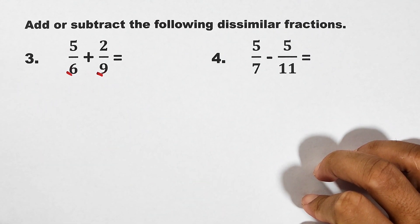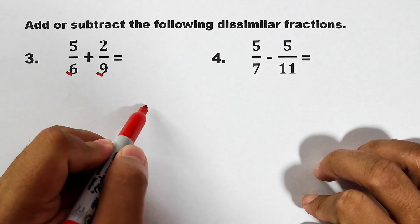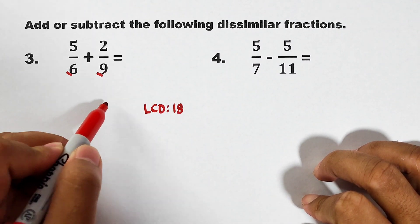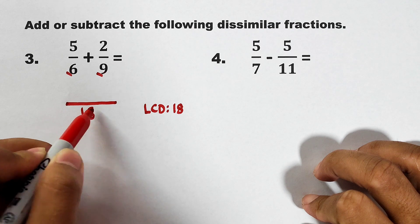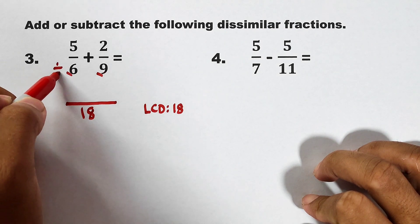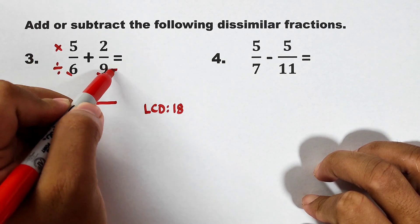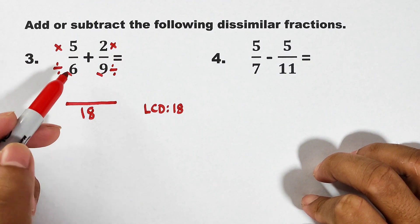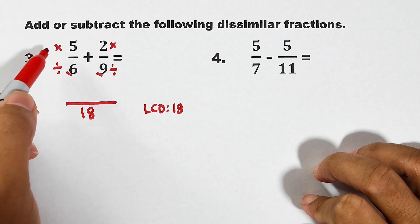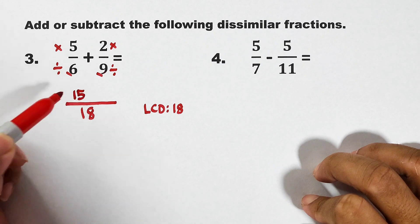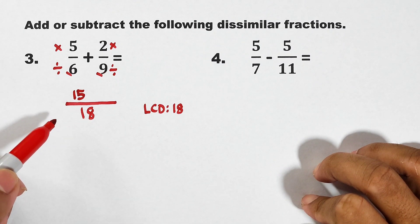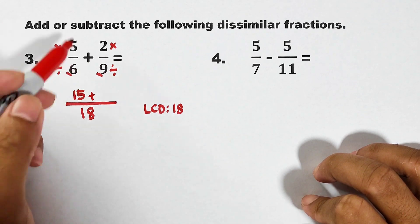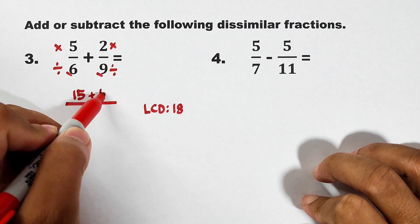Now, what is the least common denominator between these numbers? Their LCD is 18. It will be placed here, 18. Then, don't forget to divide then multiply. 18 divided by 6 is 3. Times 5 is equal to 15. 18 divided by 9 is 2. Times 2, that is equal to 4.